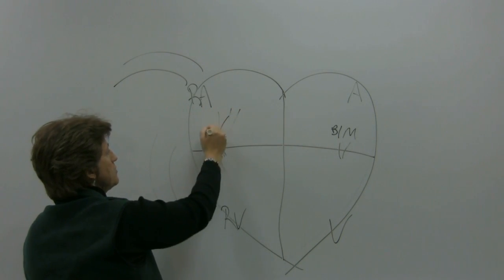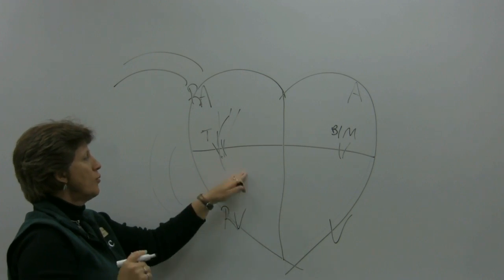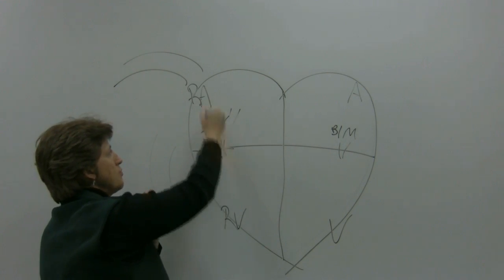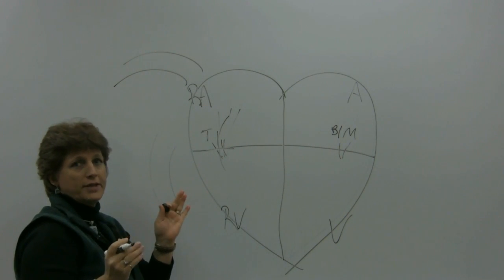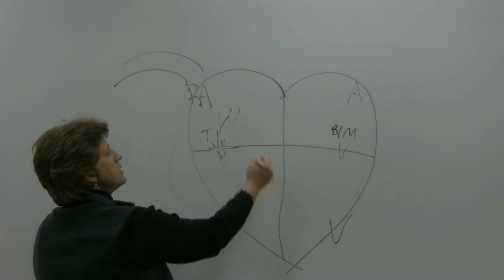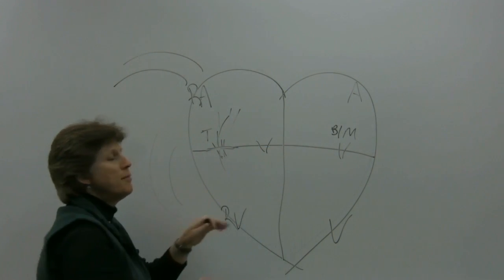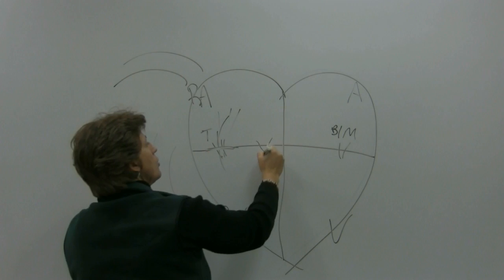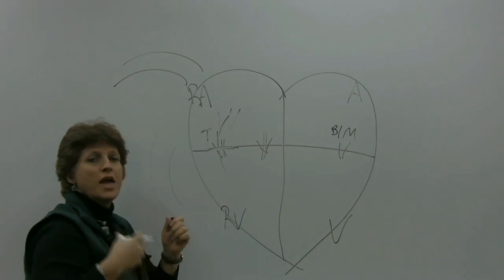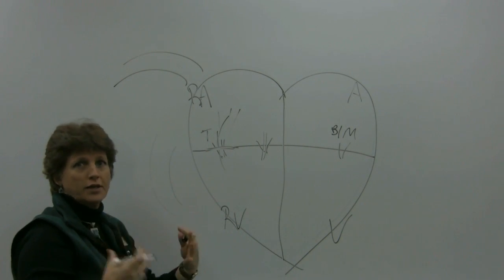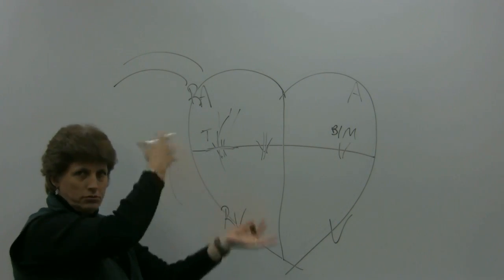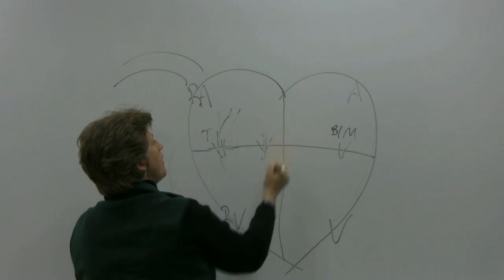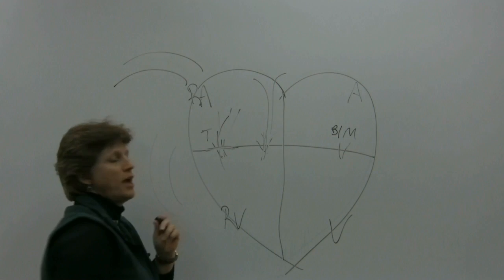The unoxygenated blood comes down through the tricuspid valve to the right ventricle. From the right ventricle, the tricuspid valve closes — because if it doesn't, blood would back up — and then the pulmonic valve opens. If you think about the pulmonary system, that's your lungs, so the pulmonic valve is associated with the lungs. The pulmonic valve opens and then you have the pulmonary artery.